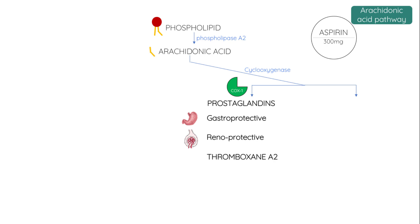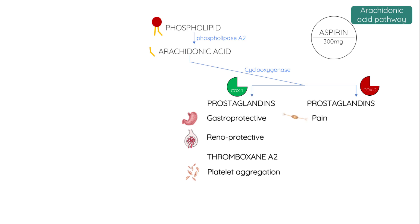which is important in the activation of platelets, helping blood to clot. COX-2 produces prostaglandins which promote inflammation and peripheral pain sensitisation.